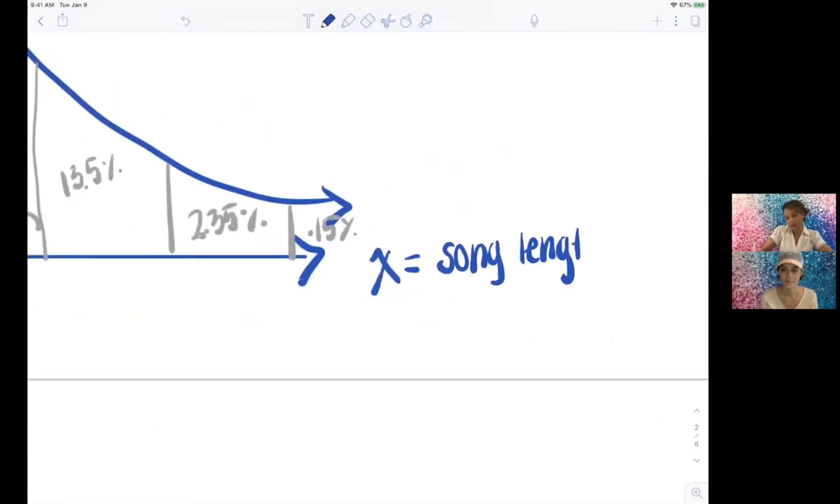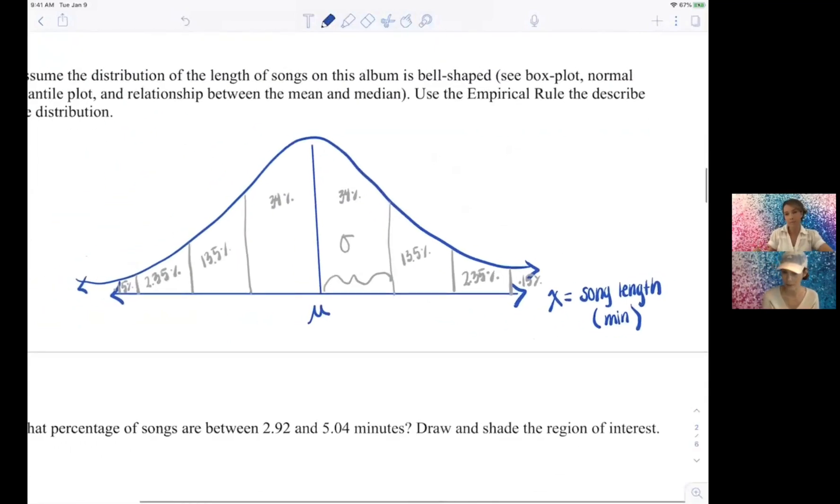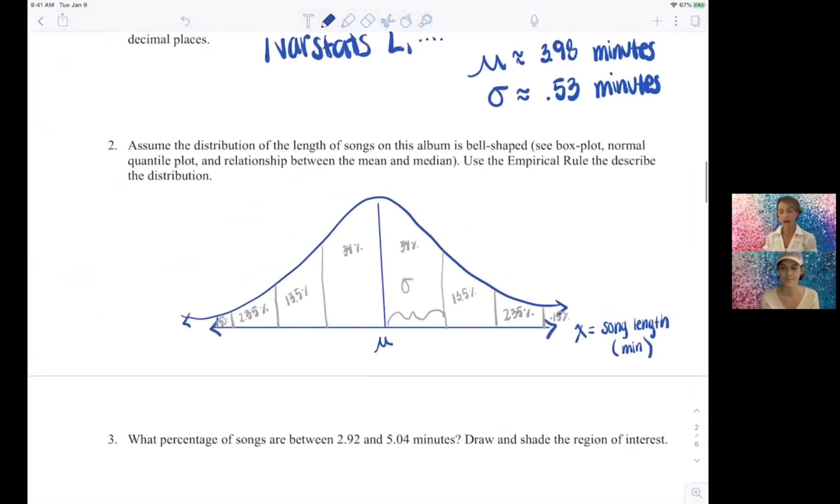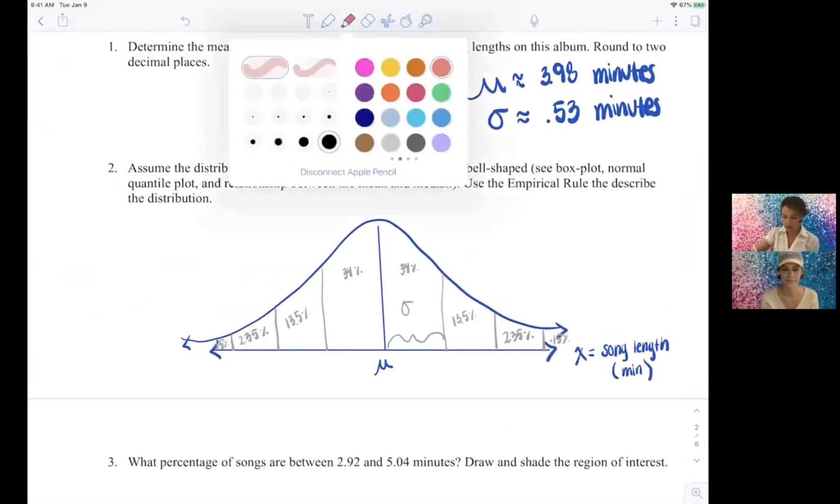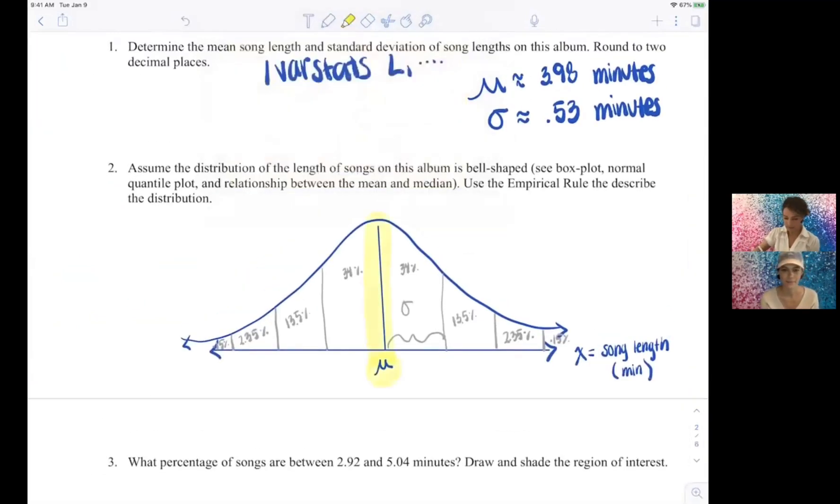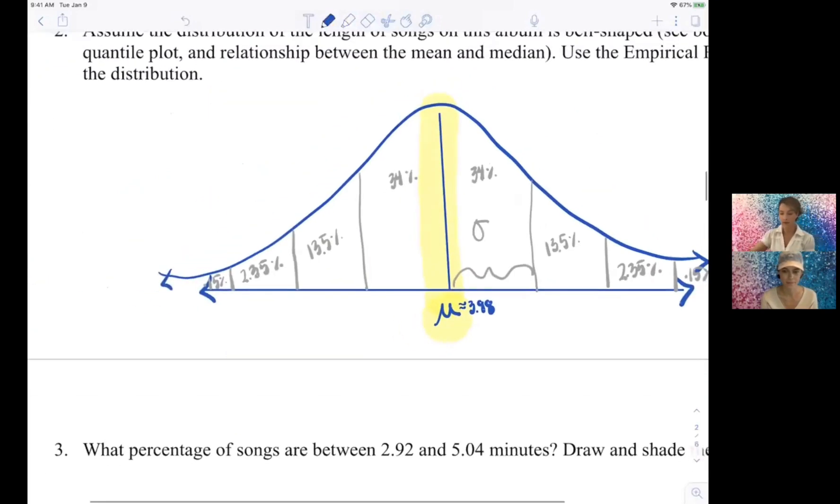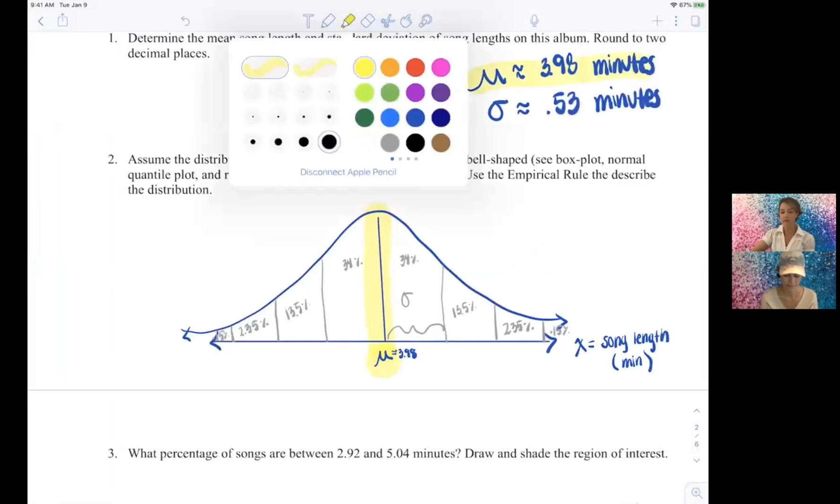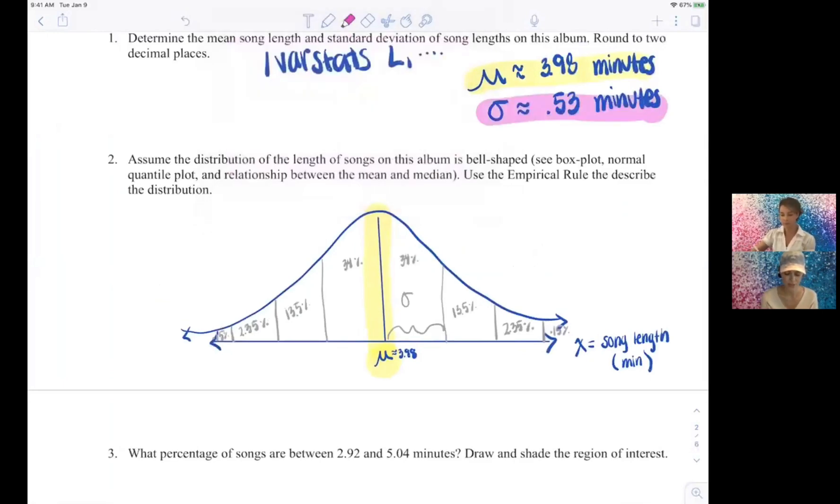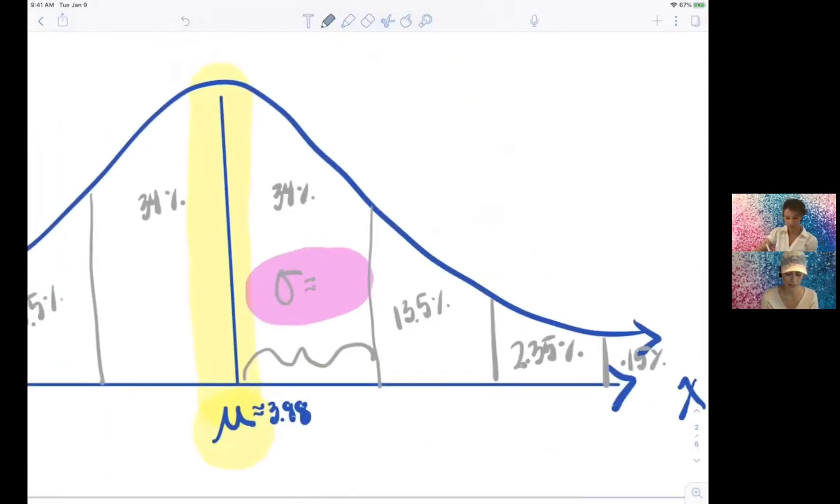And what are the units on that? In minutes, correct, yeah. We always want to label our horizontal axis. Okay, now remind me, what is the mean? The mean was that 3.98. Cool, 3.98.